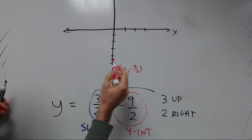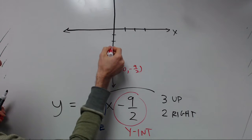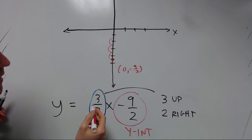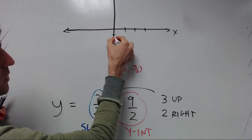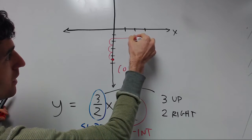So going up 3, we go 1, 2, 3. And then going to the right 2, we go 1, 2. That will put us right there.